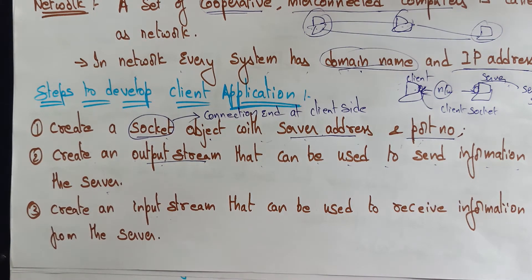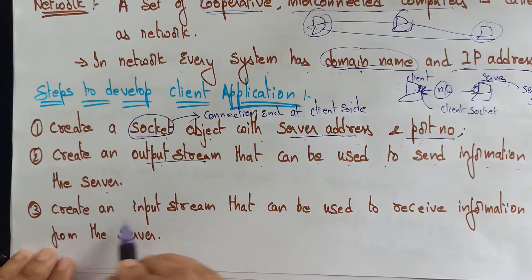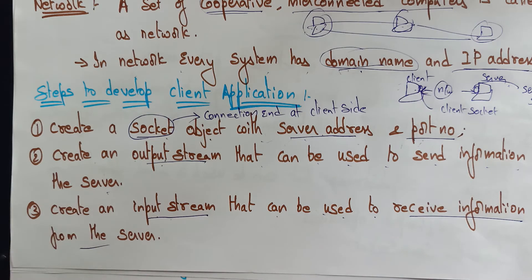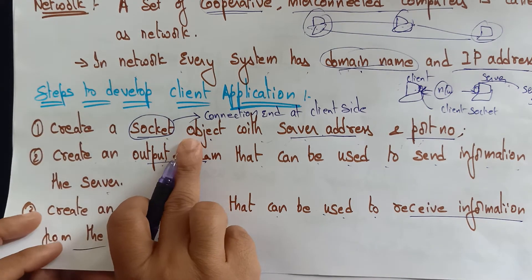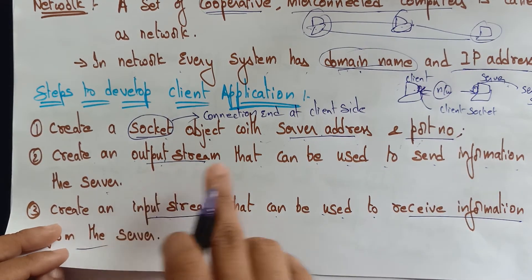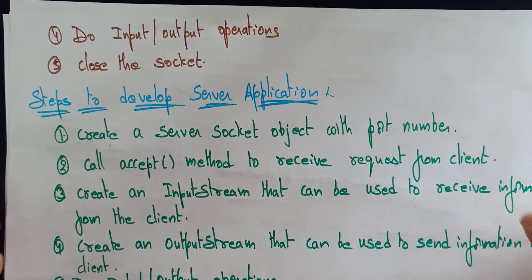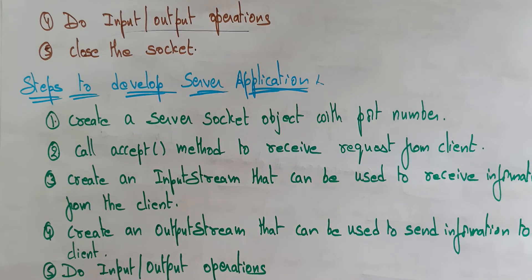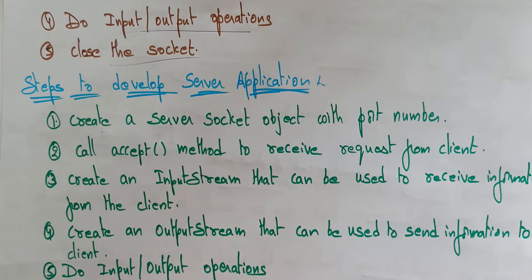Next, create an input stream also. You are sending data, but you also need to receive the response — at least an acknowledgement from the server. So create an input stream that can be used to receive information from the server. Then perform whatever input/output operations you want — sending messages, receiving responses, and so on. Finally, close the socket. That is the client application.